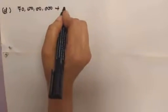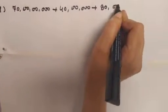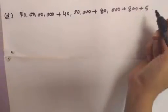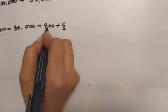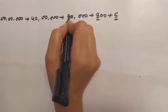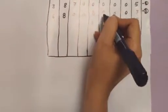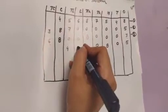Question number D. We will start from ones space — five ones, write five in ones column. Eight hundred — write eight in hundreds column and zero in tens column. Ones, hundreds, thousand, ten thousand — write eight in ten thousand column. Ones, hundreds, thousand, ten thousand, lakh, ten lakh — write four in ten lakh place and zero in lakh place.